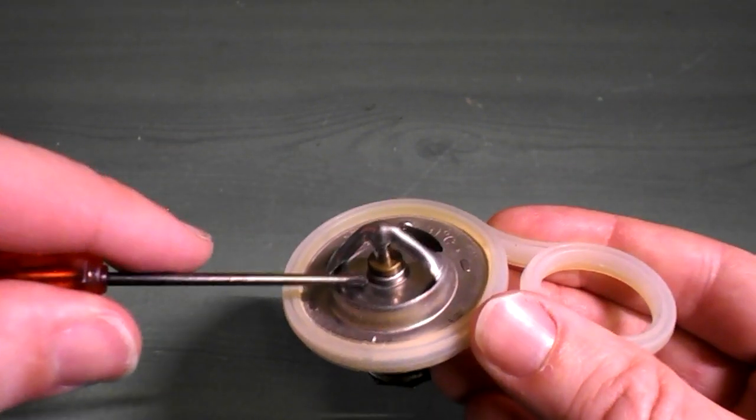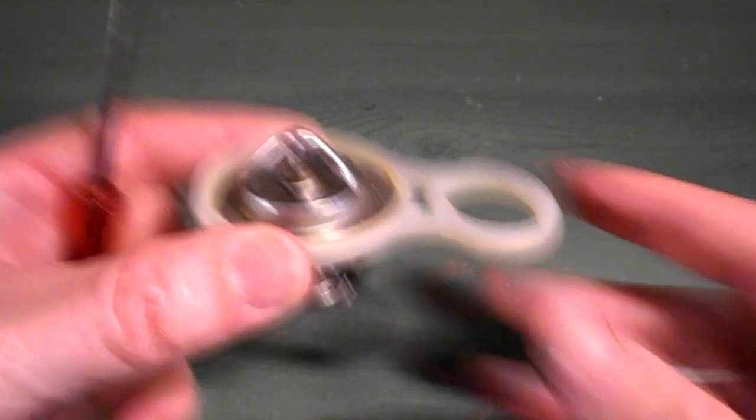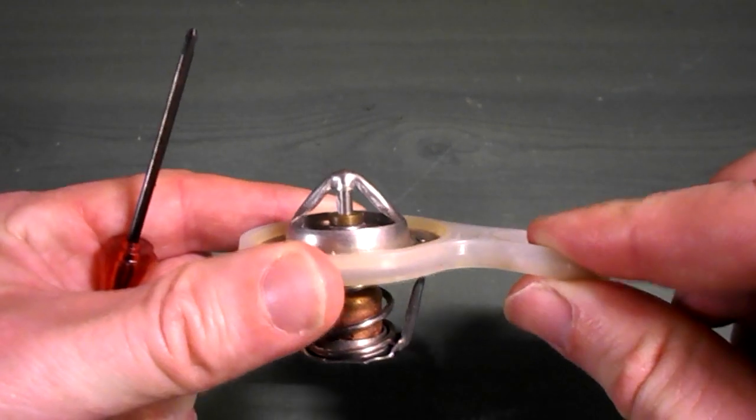Then we have the valve itself, which is this section here, the seal, slightly different than probably what you're expecting. This is off a BMW Mini.